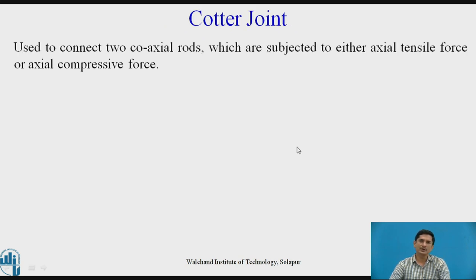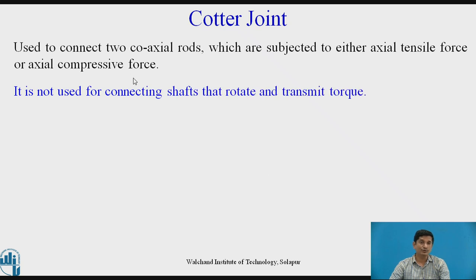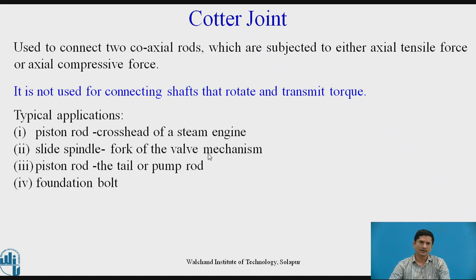Cotter joint is used to connect two coaxial rods which are subjected to either axial tensile force or axial compressive force. It is not used to connect shafts or components that rotate and transmit torque. It is only to transmit axial forces. Typical applications are piston rod, cross head of steam engine, spindle and fork of wall mechanism, piston rod and tail or pump rod, and foundation bolts.